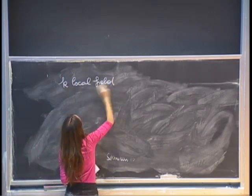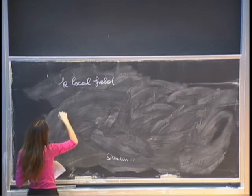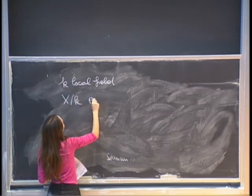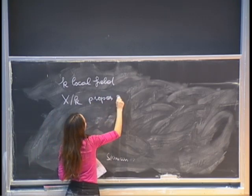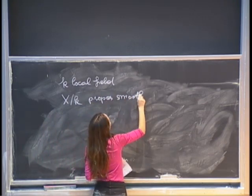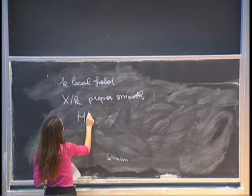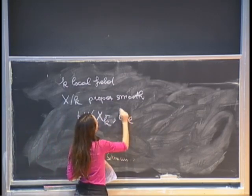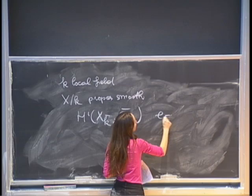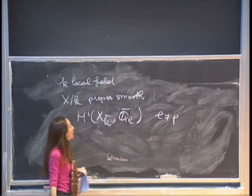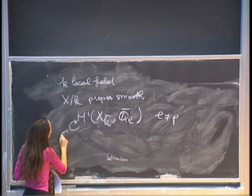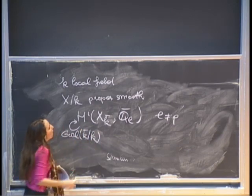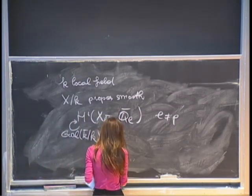Let k be a local field, either characteristic 0 or characteristic p. Let x over k be proper and smooth. The étale cohomology H^i(x_{k-bar}, Q_l-bar) for l not equal to p has an action of the absolute Galois group Gal(k-bar over k).